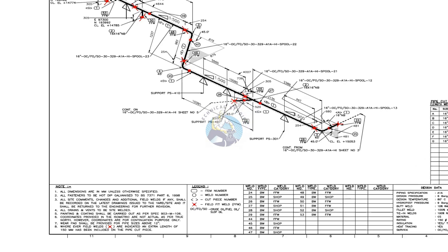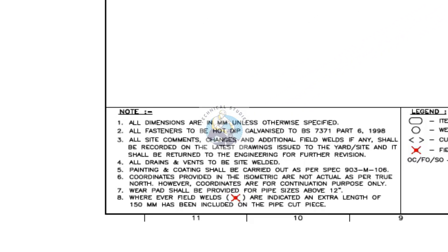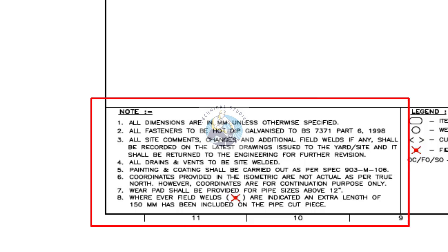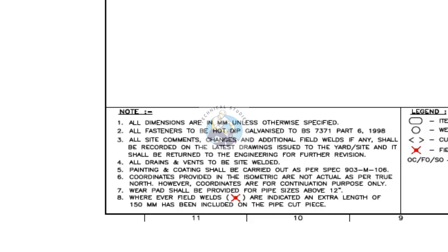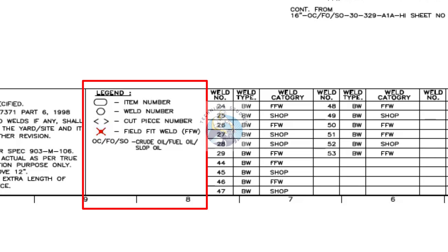The first thing to do when you receive a drawing is to review the notes. The notes provide details about the units, welding methods, painting and coding instructions, weld types, and other specifications. The legend displays the item number, weld number, cut piece number, field weld number, and other details.